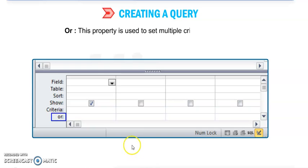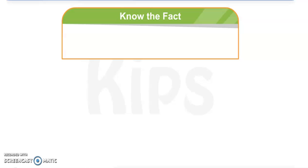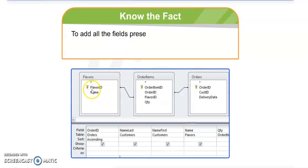Next is the OR option. This property is used to set multiple criteria. You want to give multiple conditions, one or more conditions, so you can use the OR column.